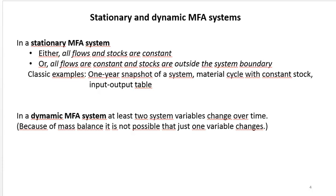We need to distinguish between stationary and dynamic MFA systems. In a stationary MFA system, a one-year snapshot is representative for all years of the system. This is the case if all flows and stocks are constant over time, or if all flows are constant and stocks are outside system boundaries. Examples include one-year snapshots of systems like material cycles with constant stock or input-output tables.